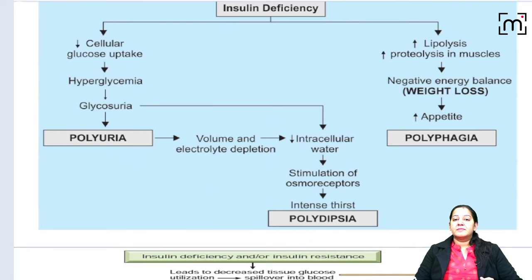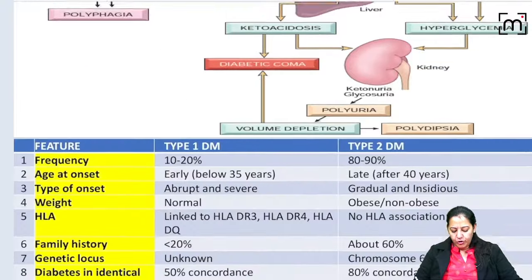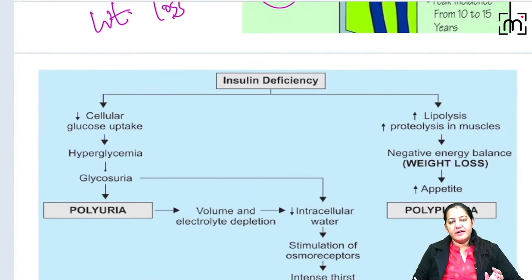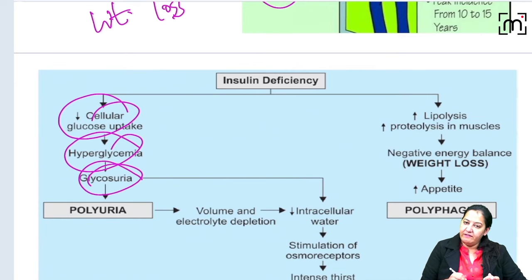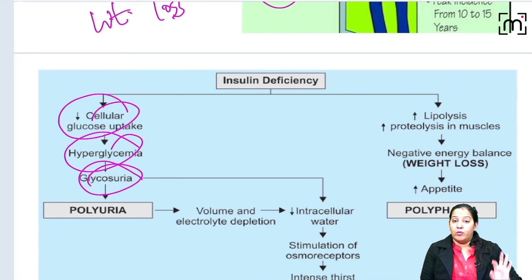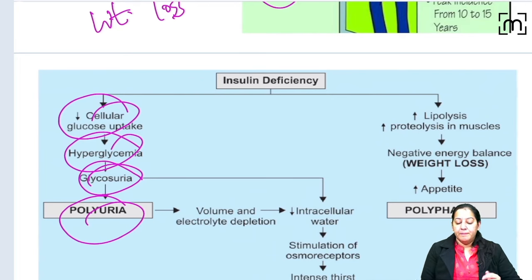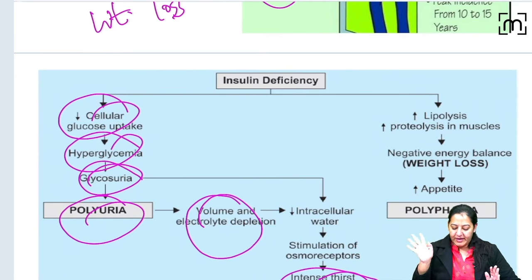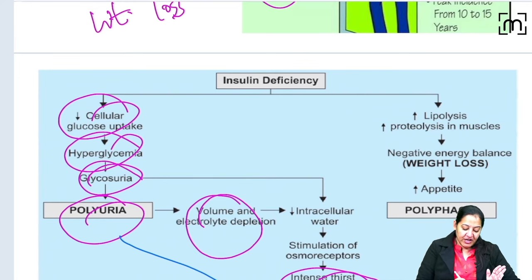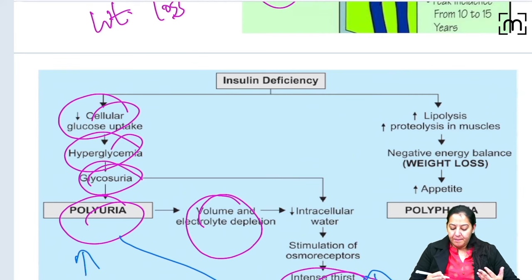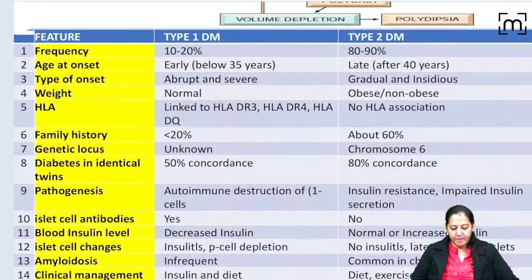The reason for these symptoms: glucose in the blood cannot get stored, so it spills into the urine (glycosuria). Glucose is an osmotic molecule and drags water with it, resulting in polyuria. Polyuria causes dehydration and volume depletion, which stimulates the thirst center causing polydipsia. Regarding polyphagia — because of weight loss and negative energy balance, the patient has increased appetite.